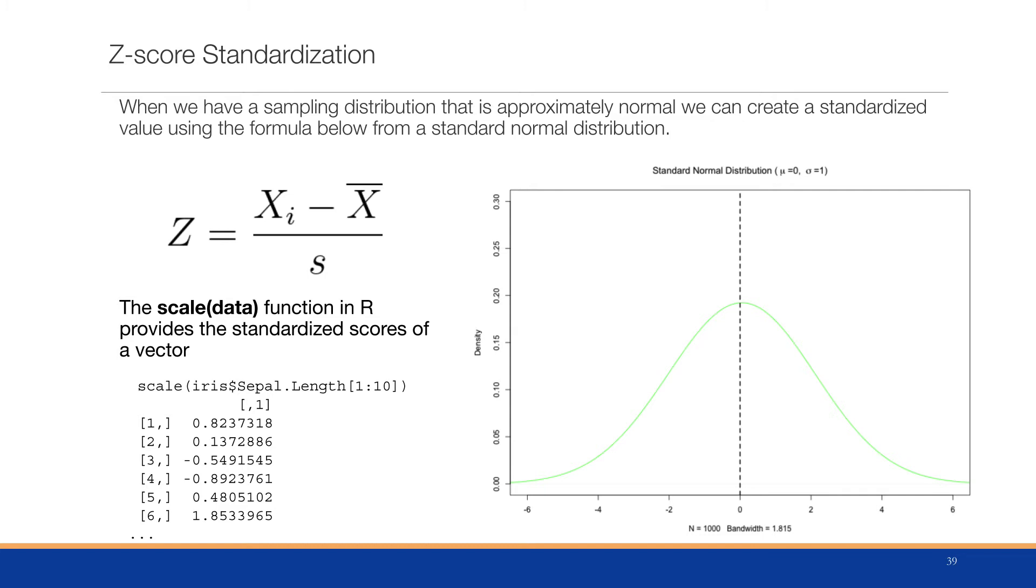Using our example before, we'll take that scale function in R and we'll pass in the first 10 items of the sepal.length from the iris dataset. And we get the numbers 0.82. That is 0.82 standard deviations away from the mean to the right side of the mean, because it's positive. So it would appear somewhere in this vicinity.